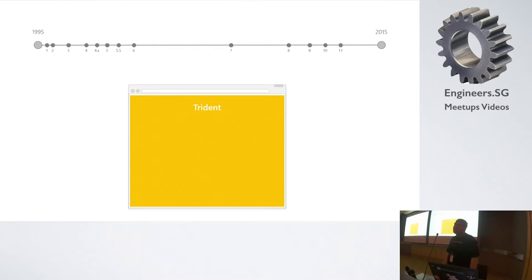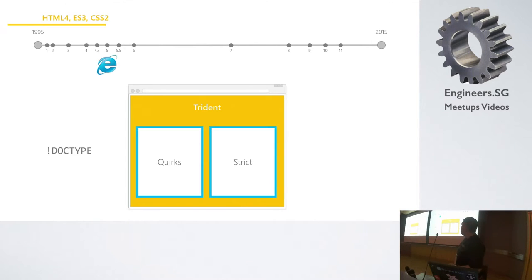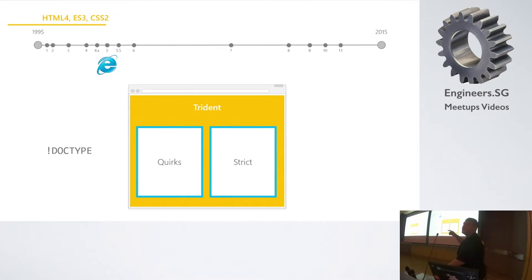Believe it or not, the legacy code from IE 1 onwards was never changed. It only adds something new. Remember the doctype? Quirks mode, strict mode in Trident. Anyone use IE5 before? You remember how painful it was.